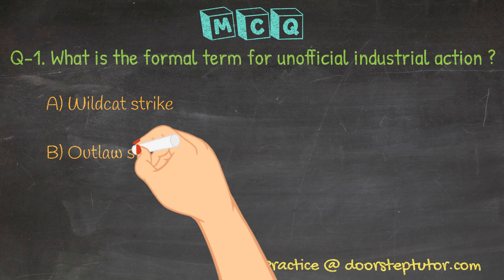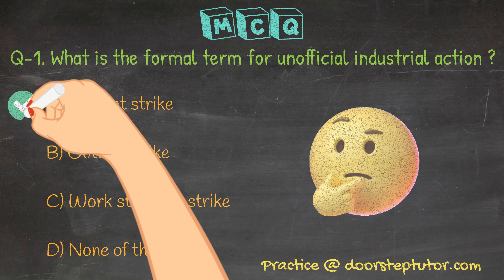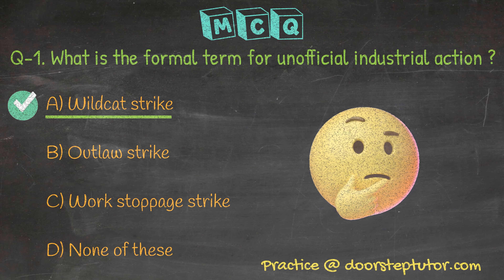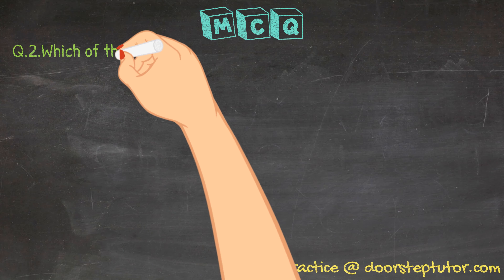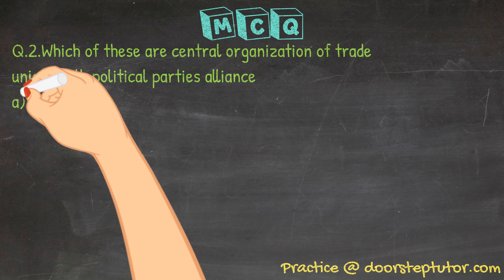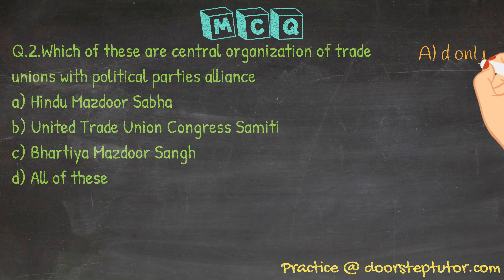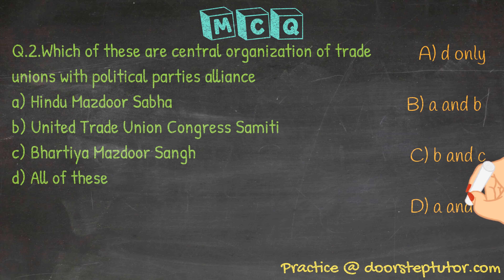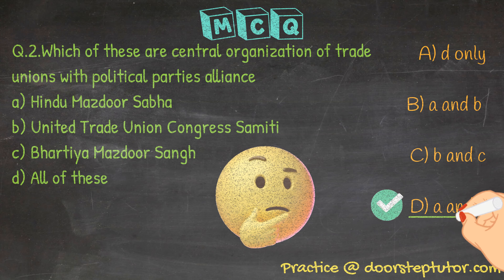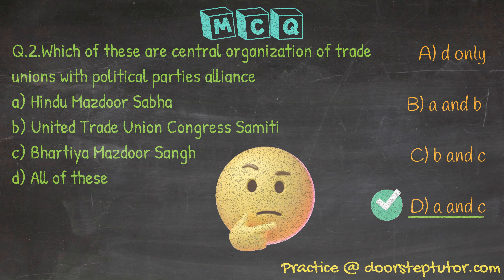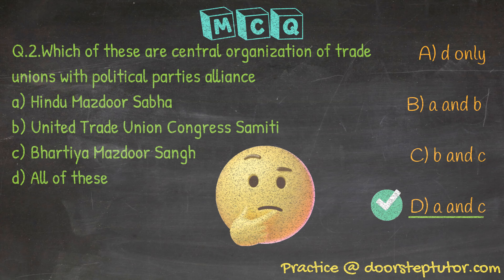Let us discuss some questions. What is the formal term for unofficial industrial action? A wildcat strike is what is called unofficial industrial action. Question number two: which are the central organizations of trade unions with political party alliances? There are a lot of political parties who ally with trade unions, and the central organizations here are Hindu Mazdur Sabha and Bhartiya Mazdur Sangh.